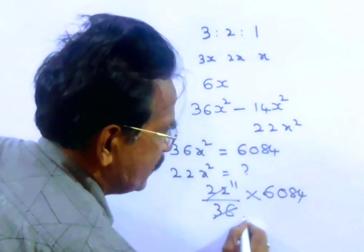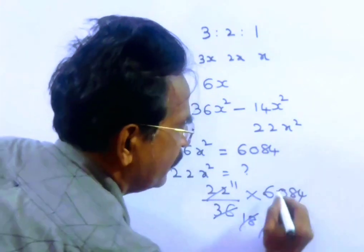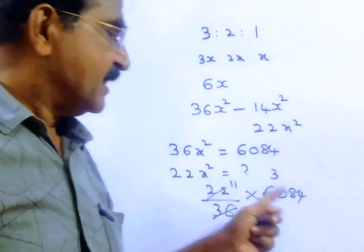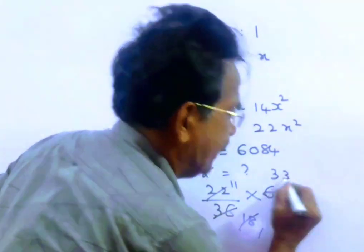2 elevens, 2 eights, eighteen. 18 threes, 54, 68. Again, 18 threes, 54, 14.